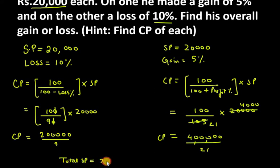Selling price is 2 into Rs. 20,000, because 2 buffaloes at the same rate is Rs. 40,000. So Rs. 40,000 is the selling price.